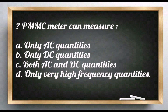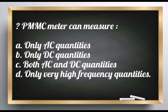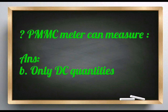Question: PMMC meter can measure: only AC quantities, only DC quantities, both AC and DC quantities, or only very high frequency quantities. Answer: PMMC meter can measure only DC quantities.